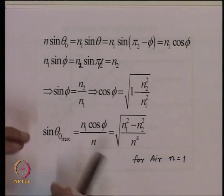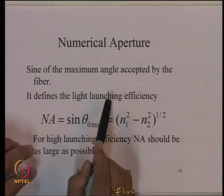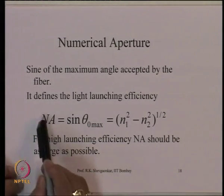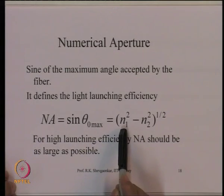This quantity tells you the light collection efficiency — similar to an aperture collecting energy. We call sin θ0_max the numerical aperture (NA) of the optical fiber. Numerical aperture is one of the most fundamental parameters of an optical fiber; it essentially defines the light launching efficiency. Thus: NA = sin θ0_max = √(N1² − N2²).